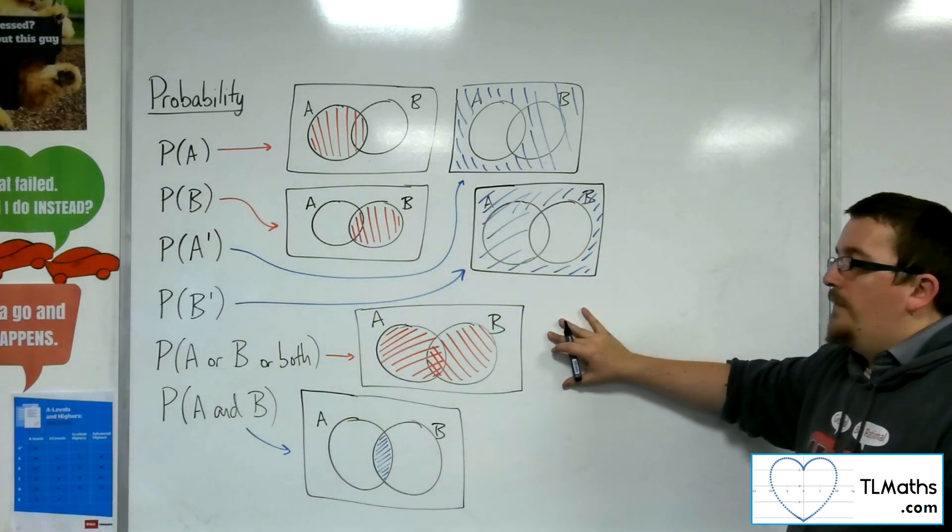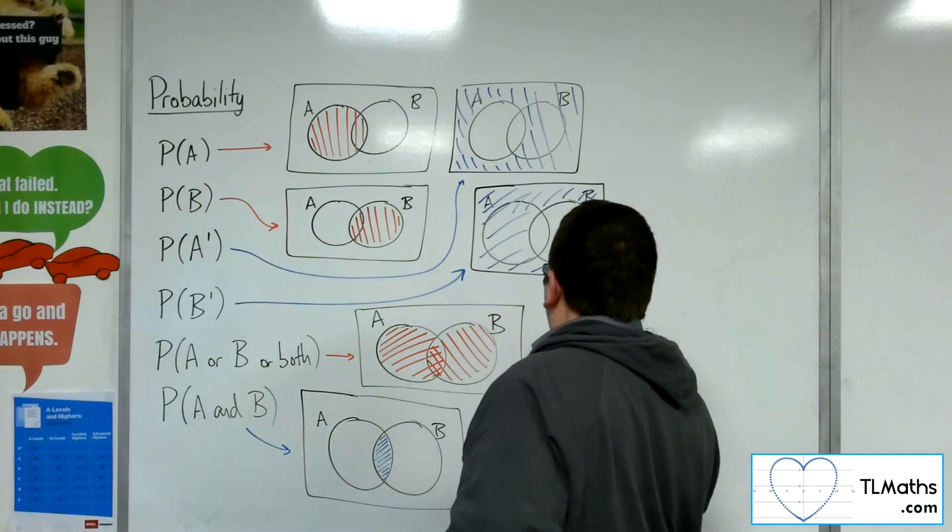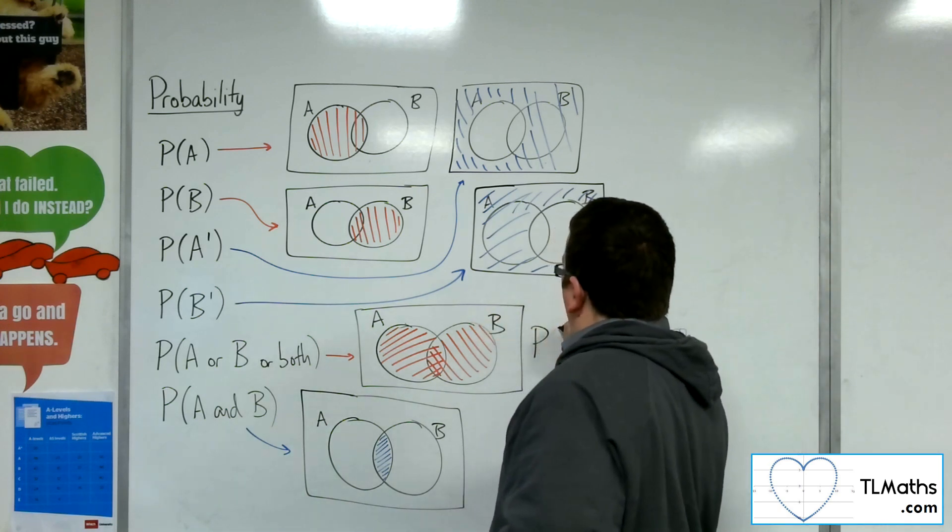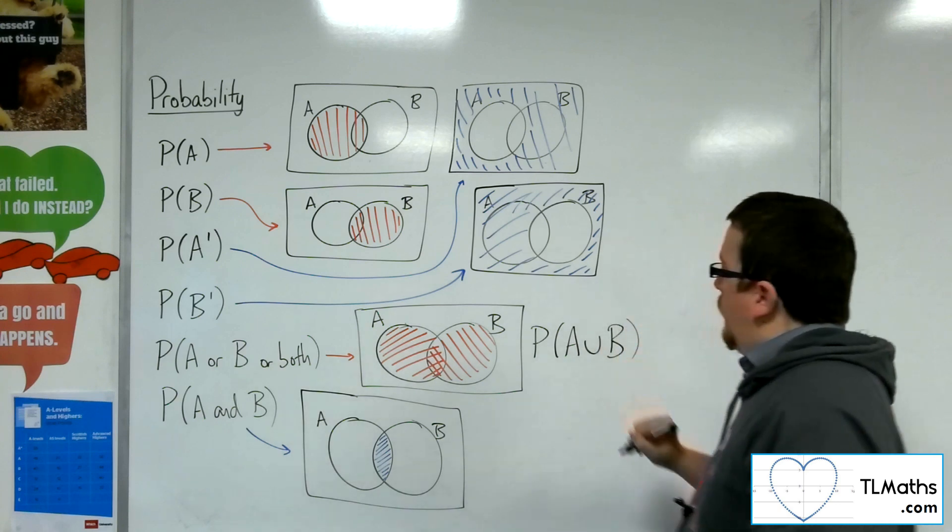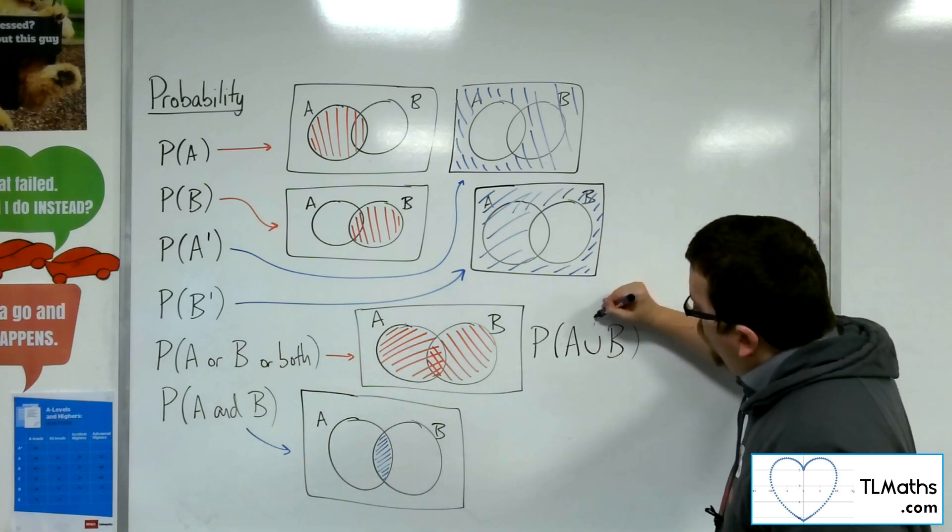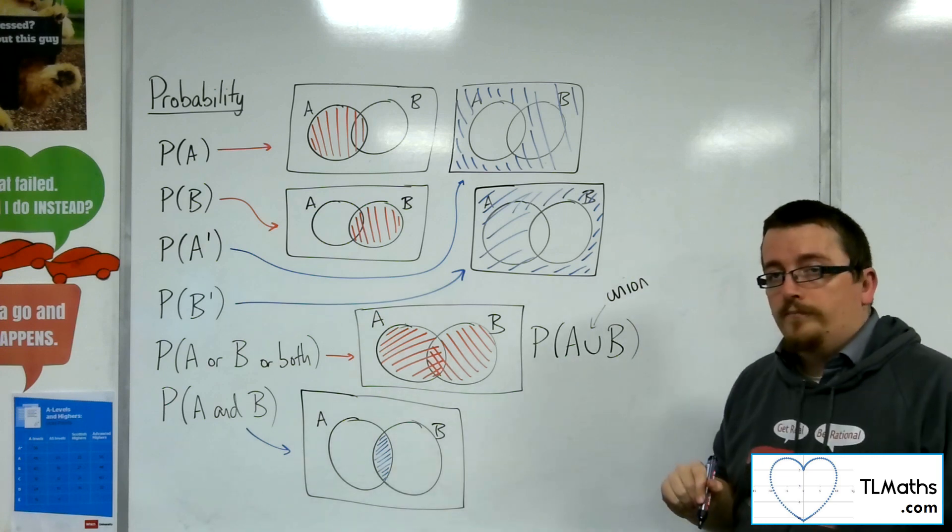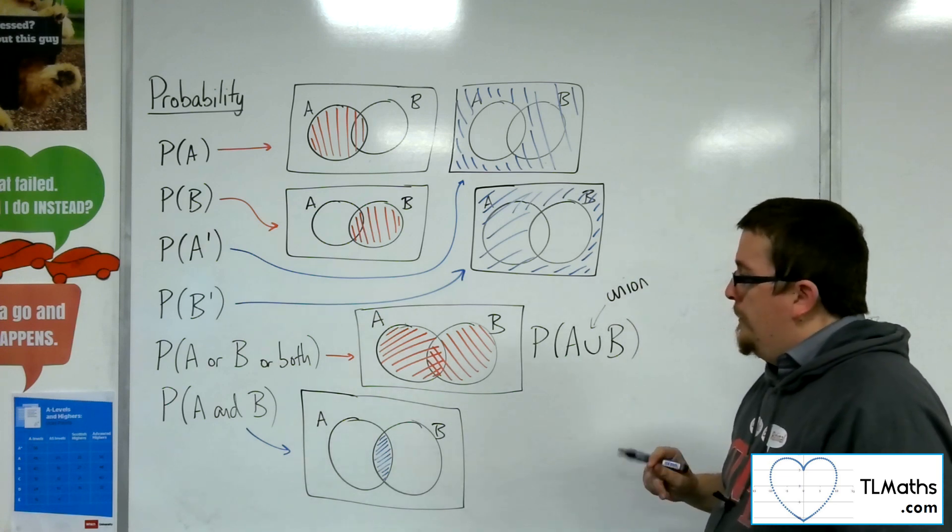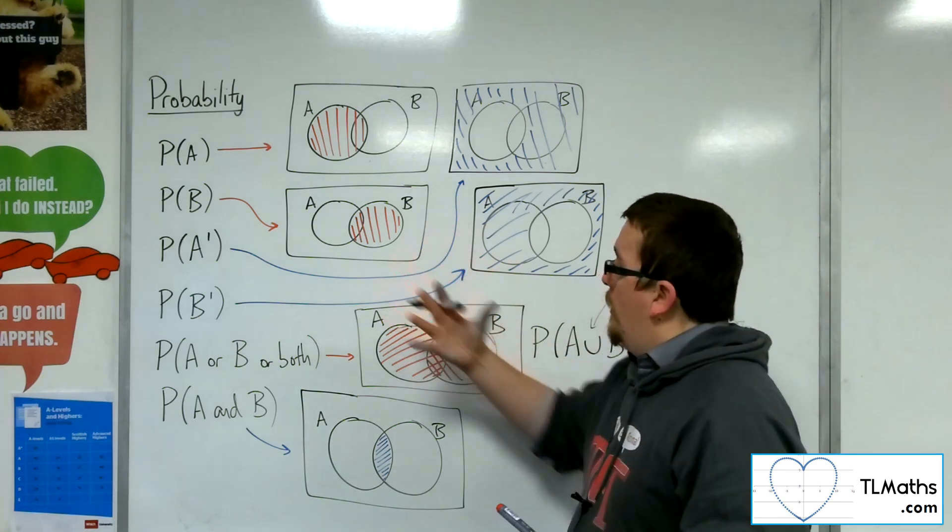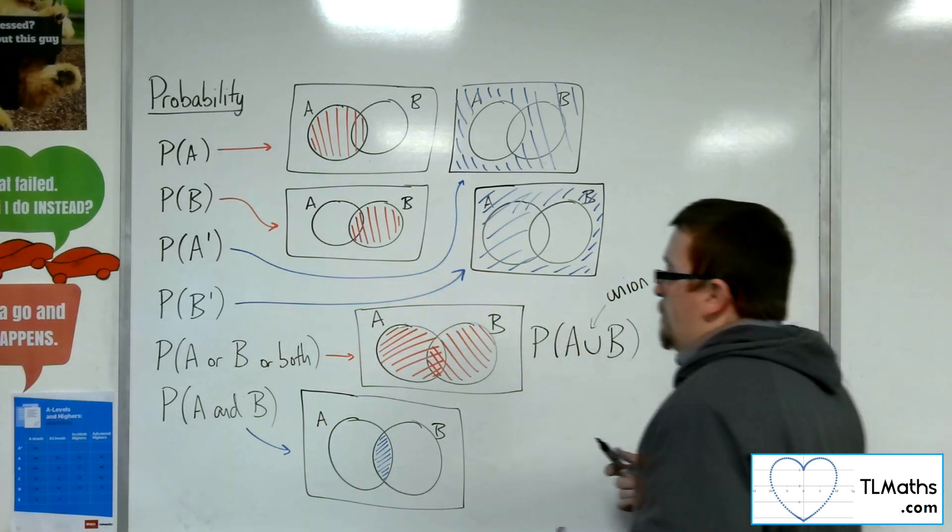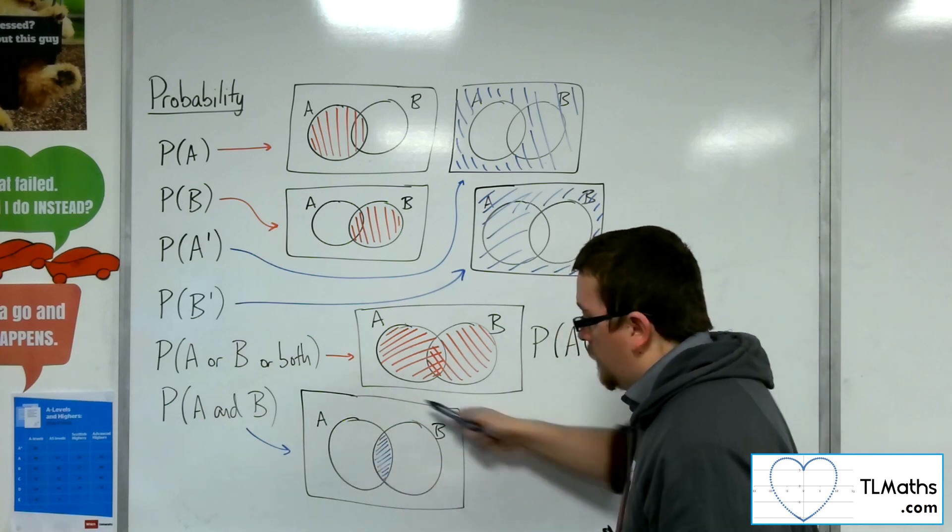Now if you're looking at the probability of A or B or both, we refer to that as the probability of A union B. So this U shape represents the union. And what you can do is you can build that up from the principal parts that we have. But first of all, I need this guy here, this overlap.